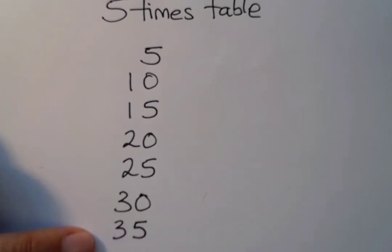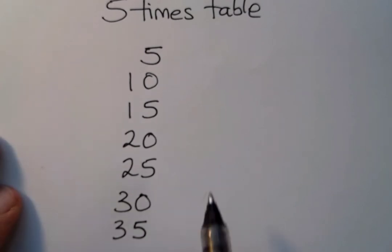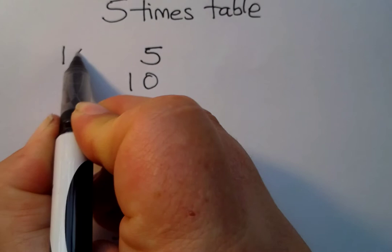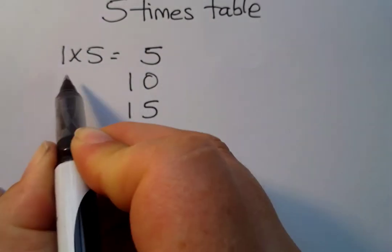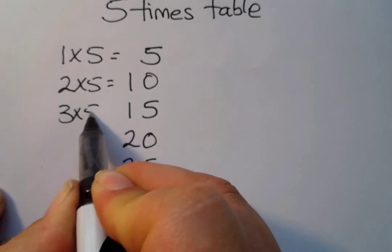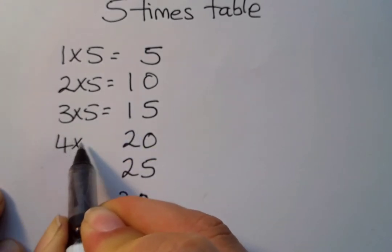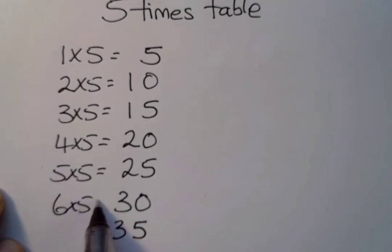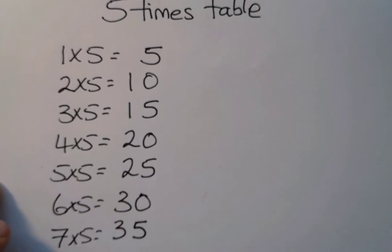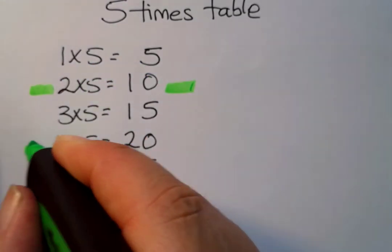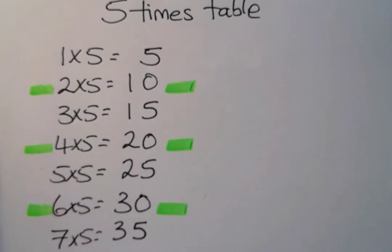Now we're going to look at the even numbers and the odd numbers separately. This is one times five — that's an odd number. Two times five — that's an even number. Three times five, four times five. What do we notice about the even numbers?